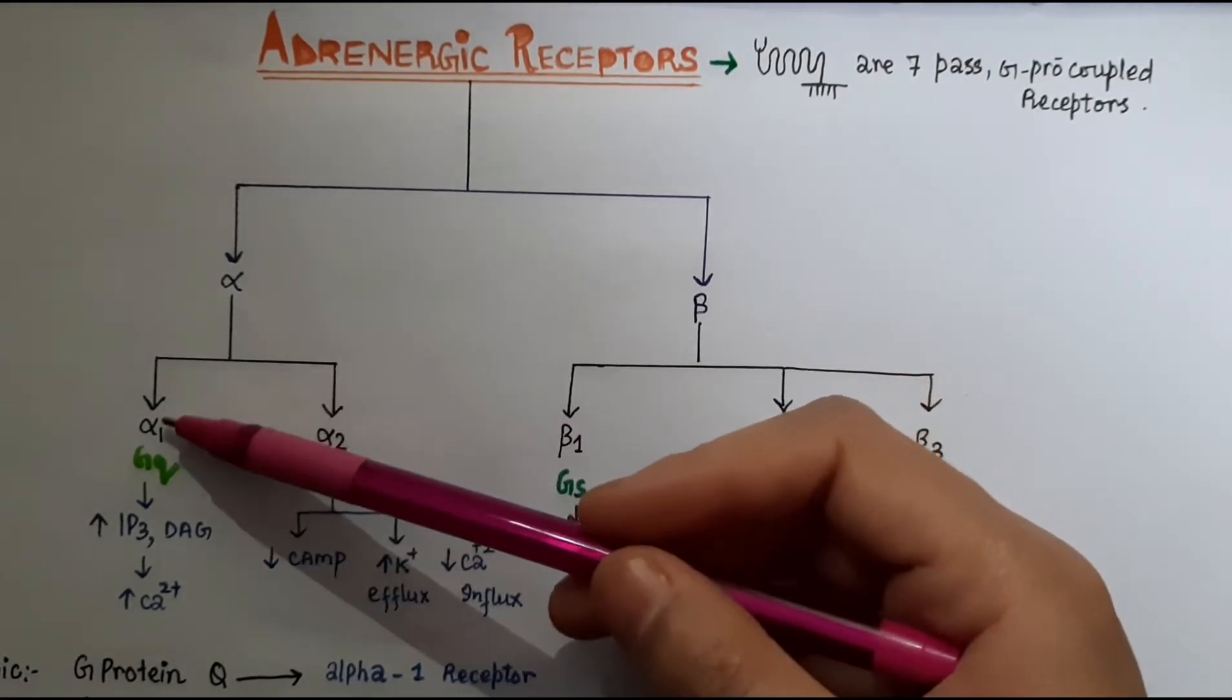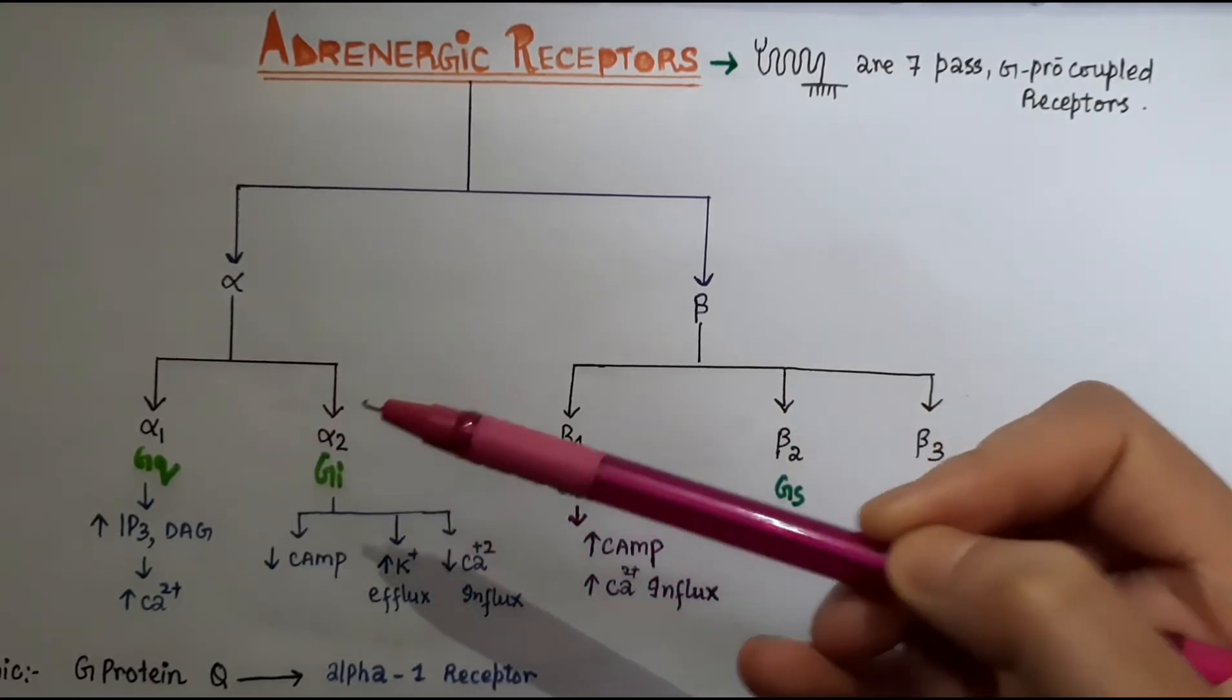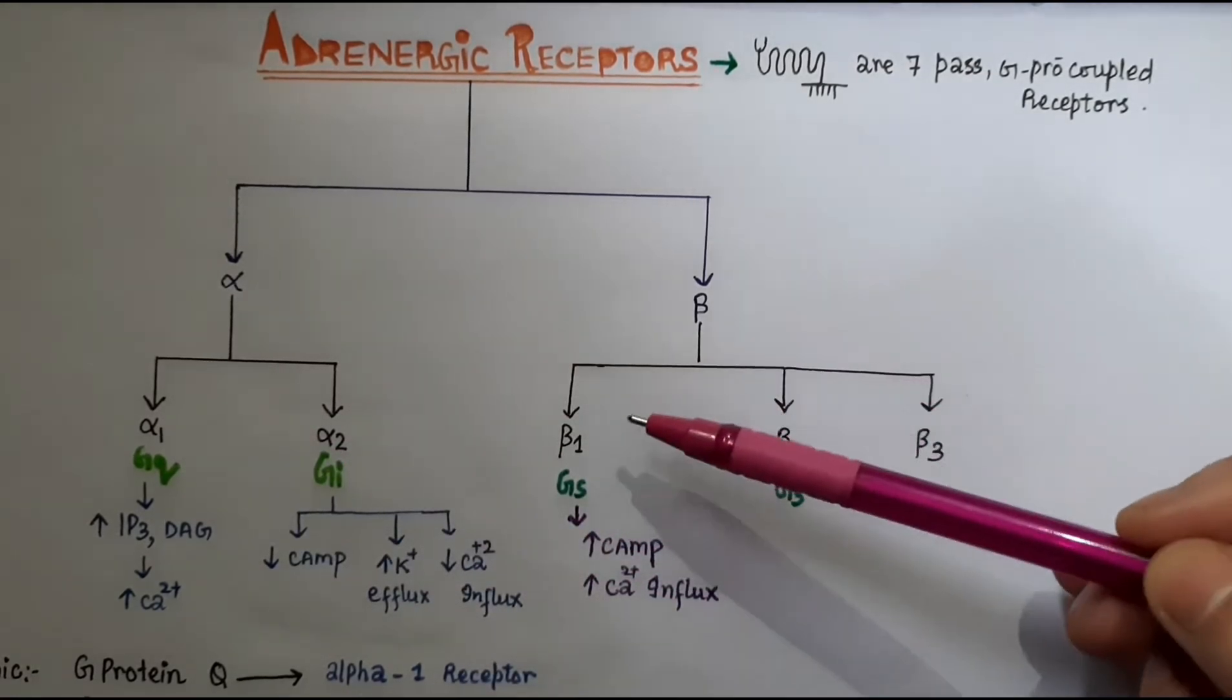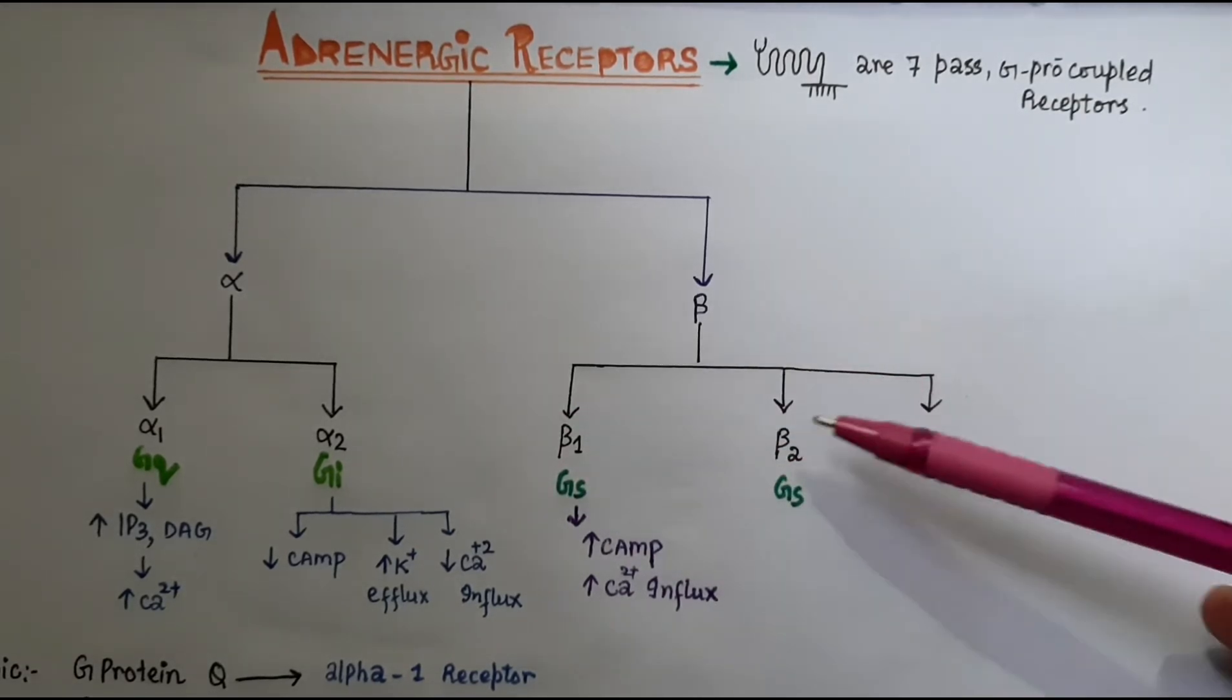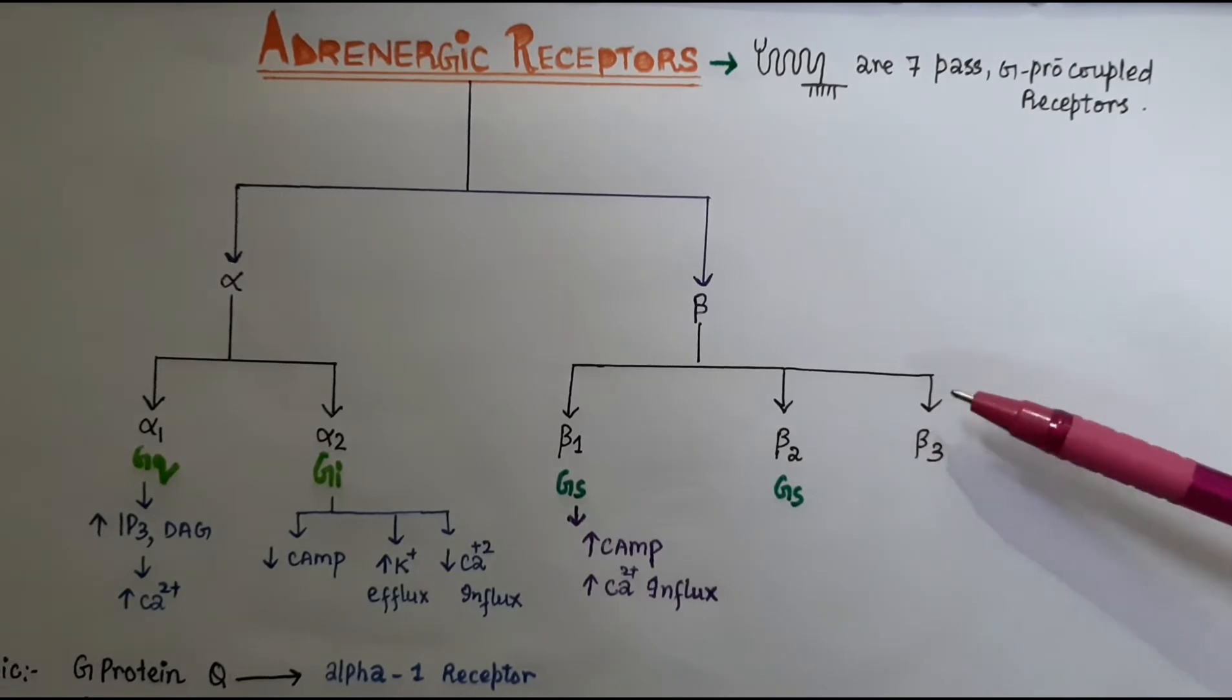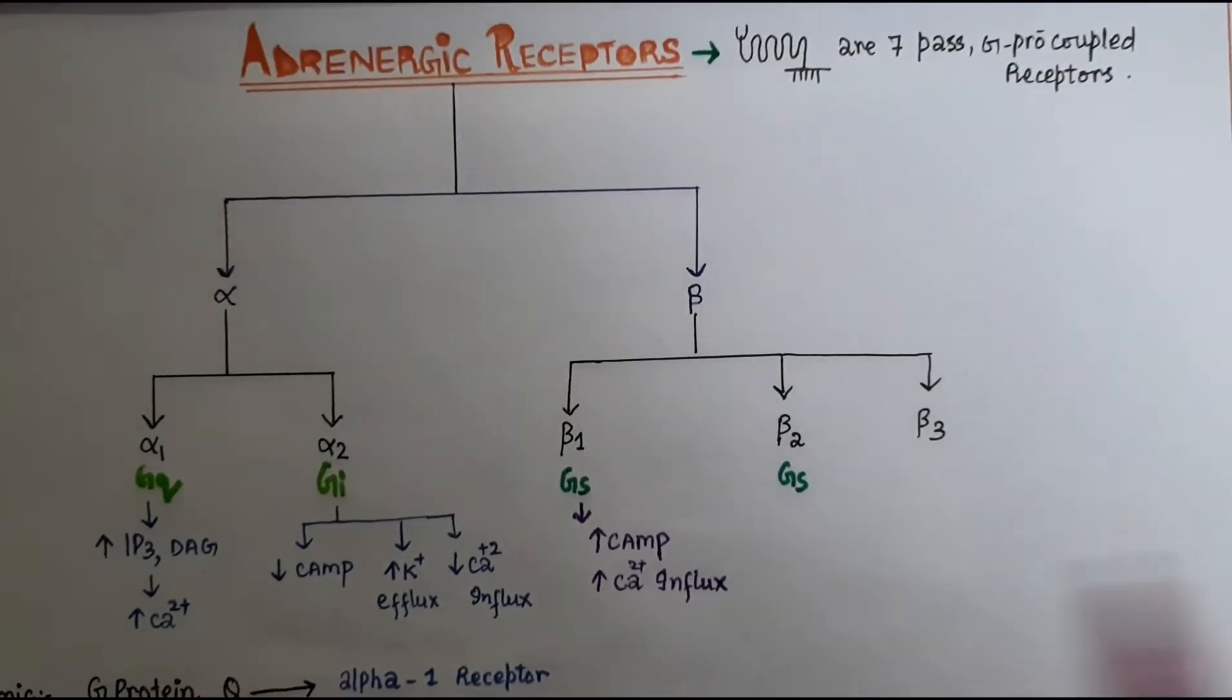Beta receptors are further classified into beta-1, beta-2, and beta-3. Now talking about alpha-1 receptor, these adrenergic receptors